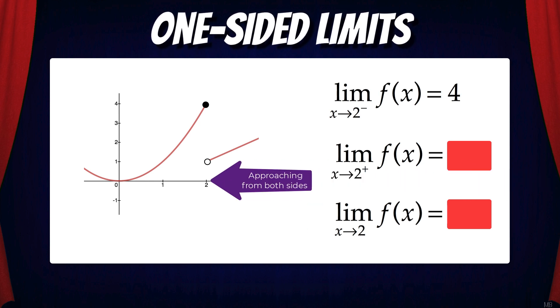The limit of f of x as x approaches 2 from the right is 1 because the function is approaching a height of 1 from the right side.